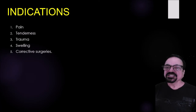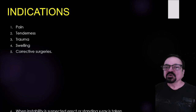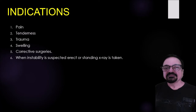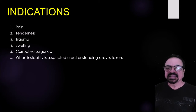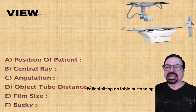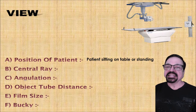Trauma is another important indication, as is swelling of any cause, and corrective surgeries. Patients may have undergone surgeries and x-rays are taken subsequently to check whether surgical results are satisfactory — for example, after implant knee replacement, to verify that implants are correctly positioned, that fractures are healing and properly approximated. When instability is suspected, the technique must be modified, because unless the patient is weight-bearing, instability will not be shown. In that case a standing x-ray is taken, usually for the AP, and typically both knee joints are included.